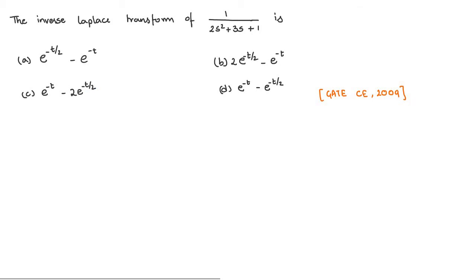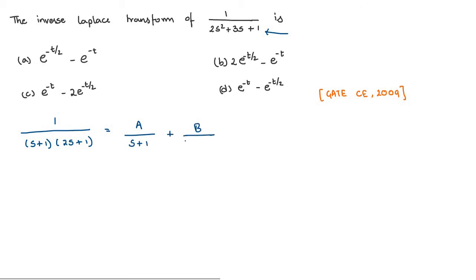Now let us solve one more question, where we need to find the inverse Laplace transform of this term. First, let us factorize this term so that we can find partial fractions. Factorizing, we get 1/((s+1)·(2s+1)). Writing it in the form A/(s+1) plus B/(2s+1). Sending the denominator to the right-hand side, we get 1 = A·(2s+1) + B·(s+1).